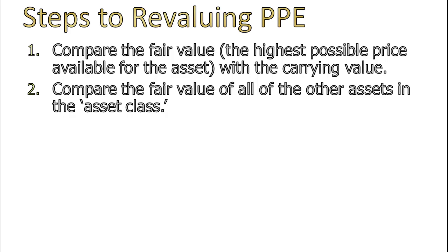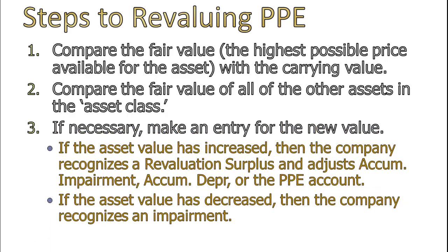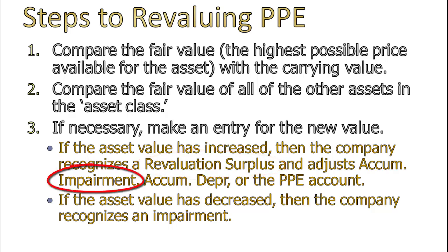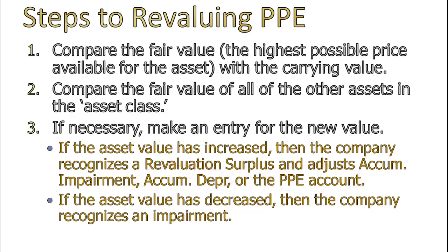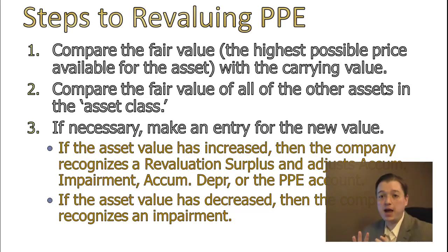Once you decide you need to revalue the asset, you make a journal entry. If the asset value has increased, you credit a revaluation surplus. The debit is either to accumulated impairment losses, accumulated depreciation, or the property, plant, and equipment account — and there is a specific order we do this in. If the value of the asset has decreased, we make an entry just like an impairment — we show a loss and put it into accumulated impairment losses.